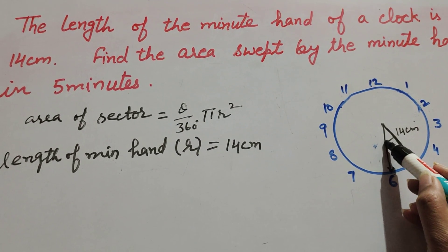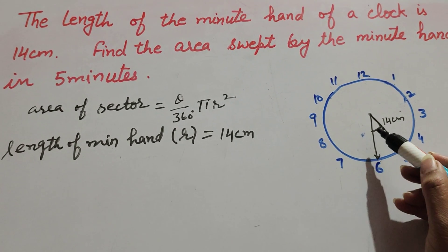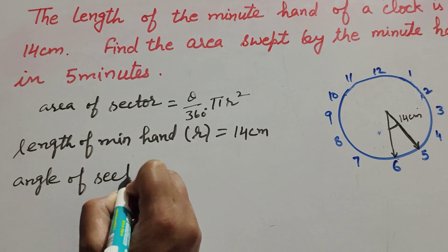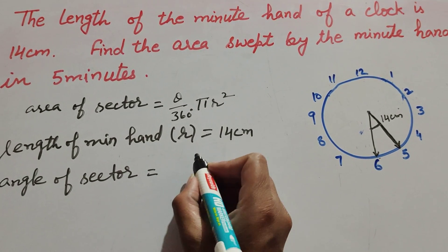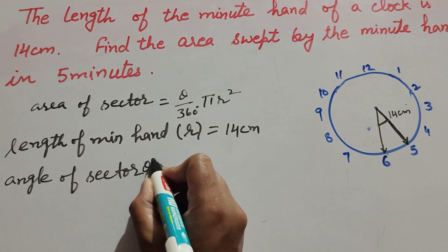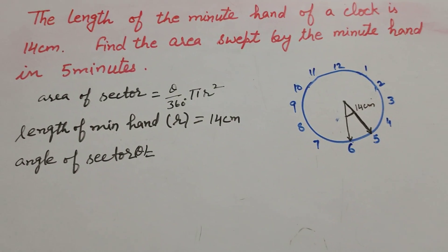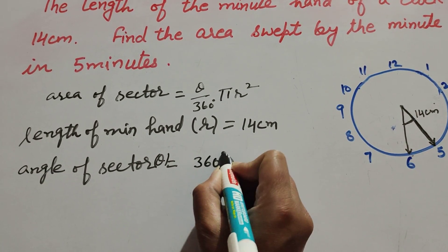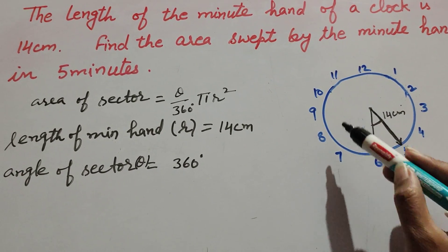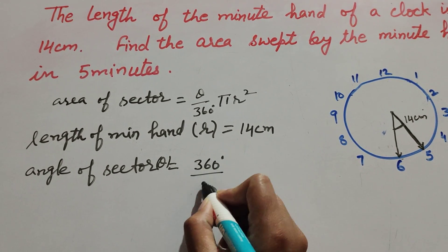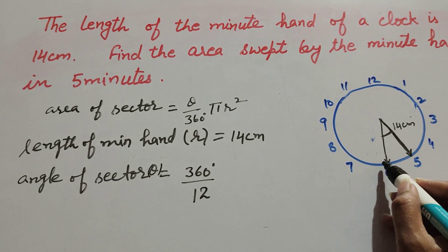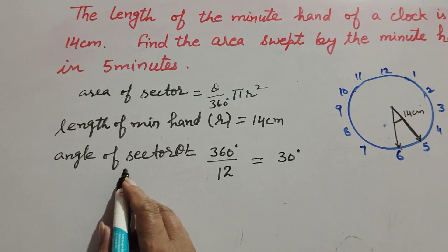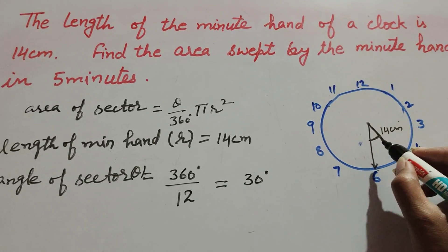The length of the minute hand equals the radius, which is 14 centimeters as given. Now, theta is the angle of the sector, but it is not given, so first we find the angle of the sector. When the minute hand completes one full circle it covers 360 degrees, and the clock is divided into 12 equal parts, so 360 degrees divided by 12 equals 30 degrees. Therefore, the angle of the sector is 30 degrees.